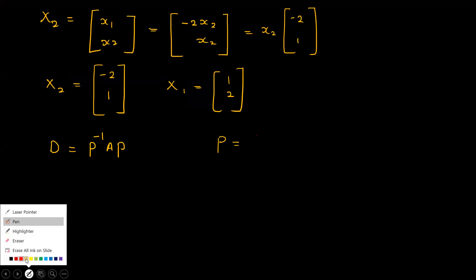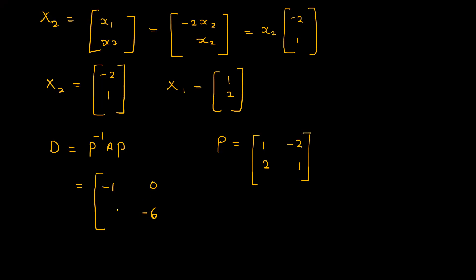Now we have the matrix P formed by the eigenvectors: [1, 2] and [-2, 1]. This is the transformation matrix P. The diagonal matrix D equals P inverse A P, with the eigenvalues on the diagonal. You can compute the diagonal matrix using a calculator by multiplying P inverse and P.